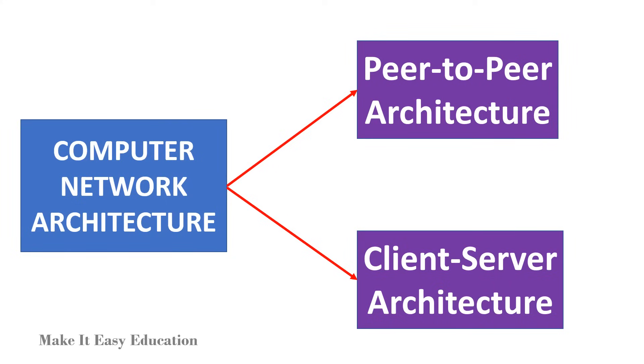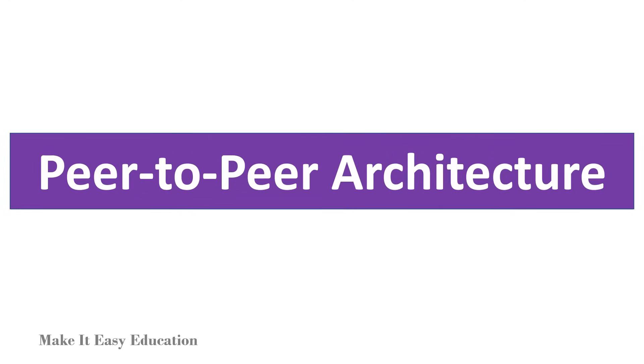The two most important computer network architectures are peer-to-peer architecture and client-server architecture.